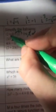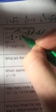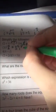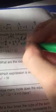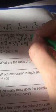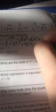If I distribute the power in, I get 3 squared times i squared, which equals 3 squared is 9, times i squared is negative 1, which equals negative 9.